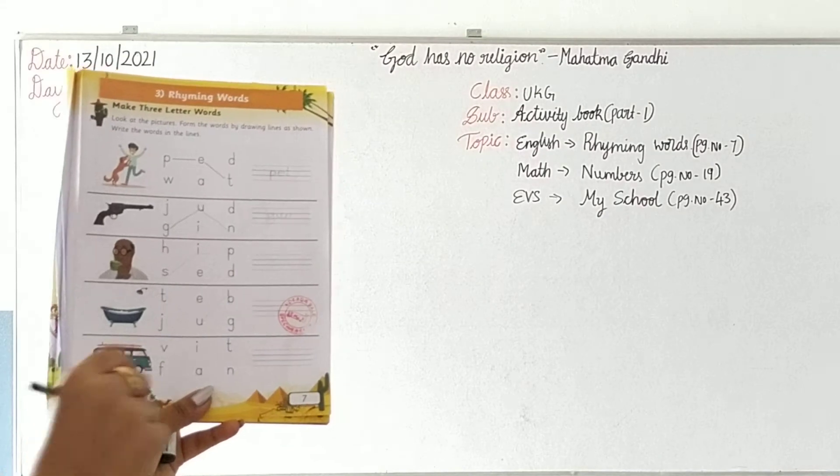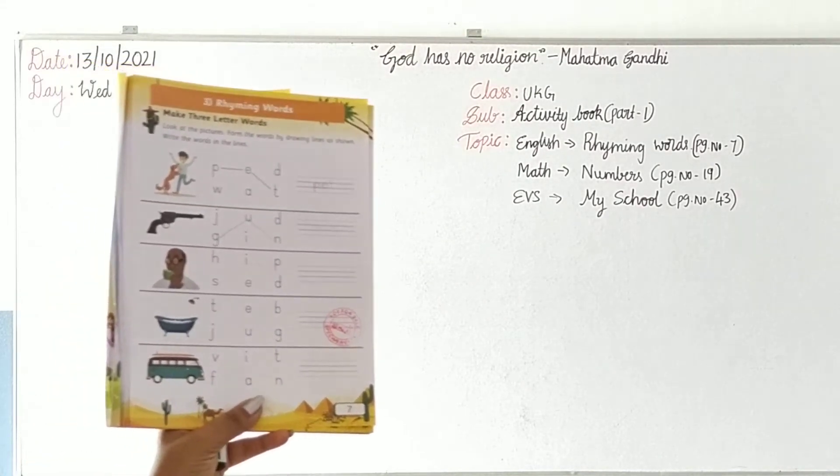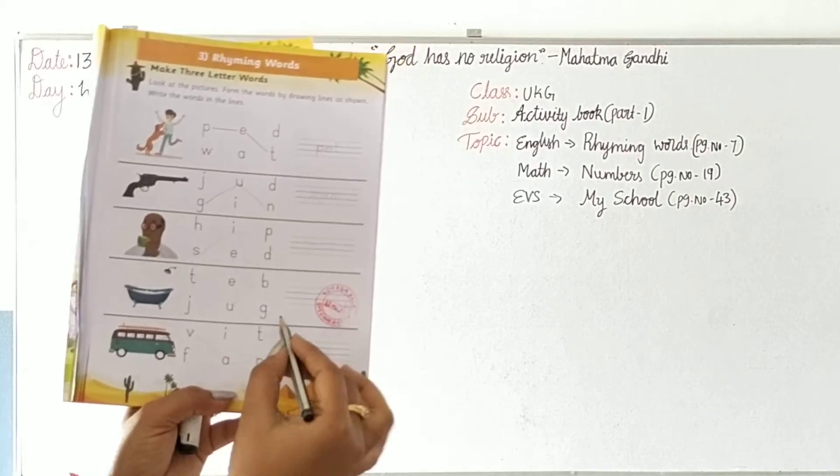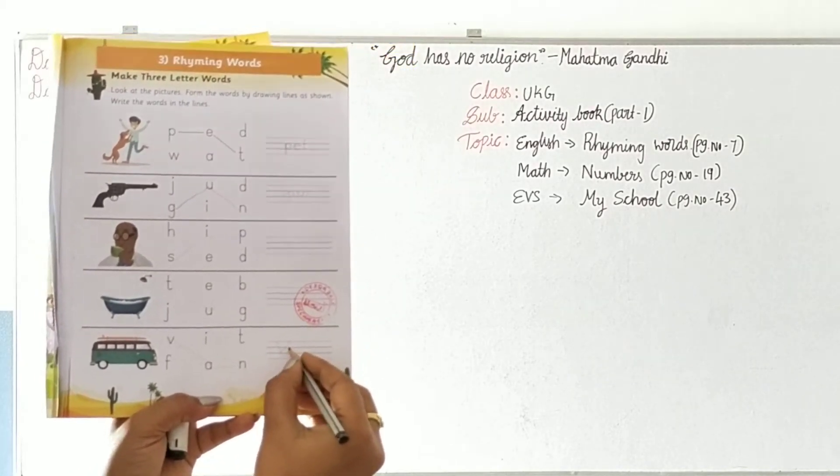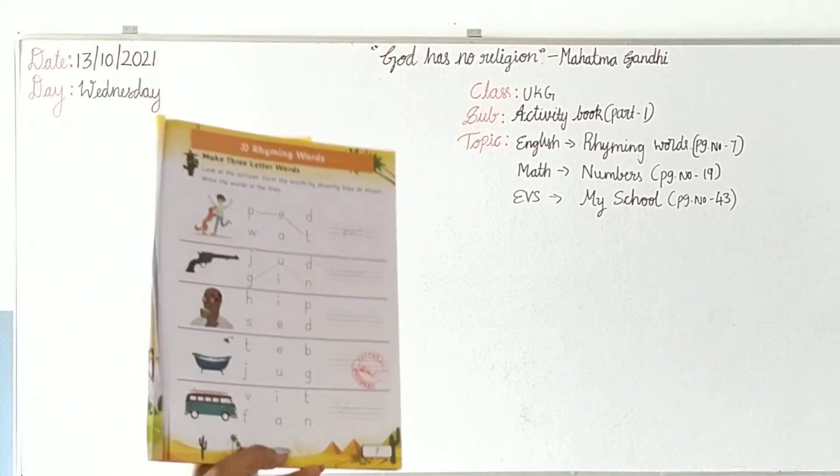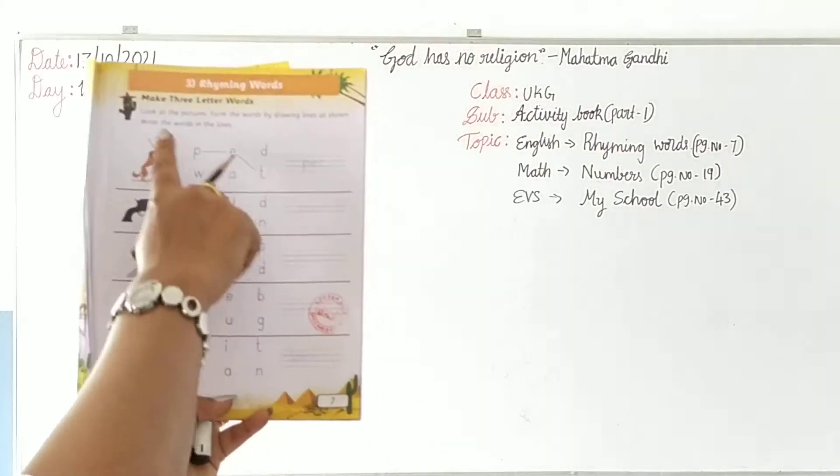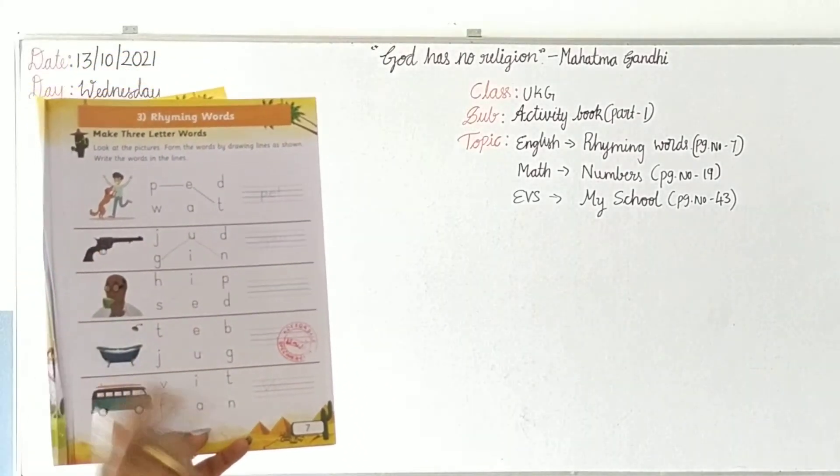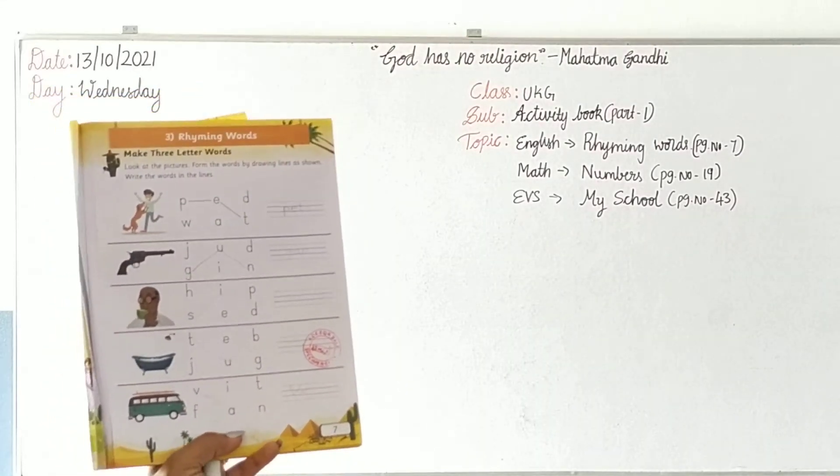You have to write the word T-U-B, tub. Next, V-A-N, van. Write the word in the lines, V-A-N, van.